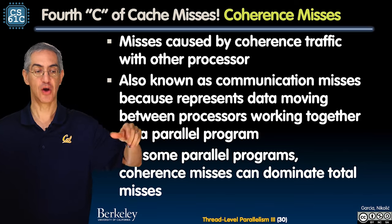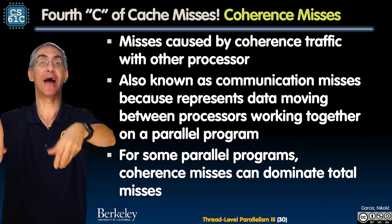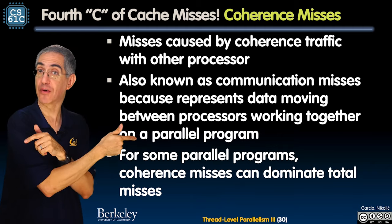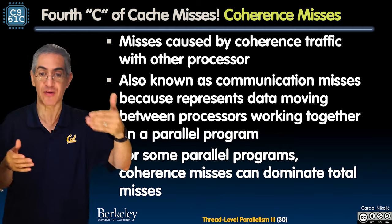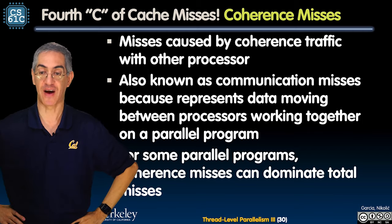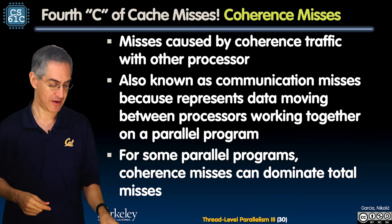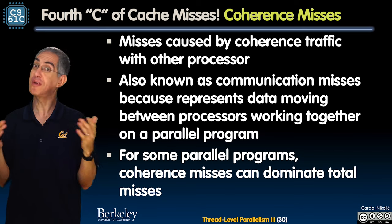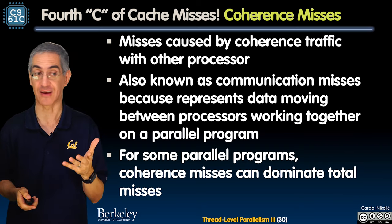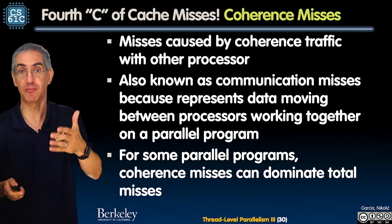There is a fourth C: a coherence miss. Within one block, two different cores think variables that may be distinct are actually shared. Now you're going to have them loaded in and out — one core invalidates the other's copies to write, but the other core wasn't actually modifying that part of the block. This is also known as a false-sharing or communication miss, and coherence misses can actually dominate total misses overall in parallel programs.